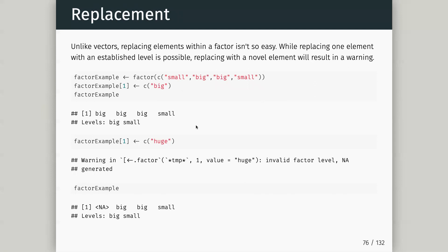Factors allow us to do a bit more with a vector by providing levels and potentially putting order on those levels. The real pain with factors is that replacing elements isn't so easy. With a vector we could just replace an element, and with a matrix it was okay as long as they're the same data type. But with a factor, if I try to replace a value with something not in the levels, it will give an invalid factor level warning and produce NA.